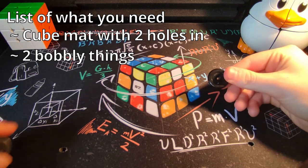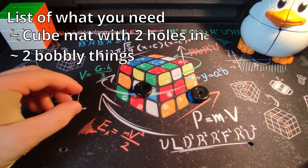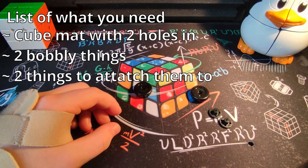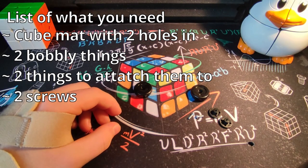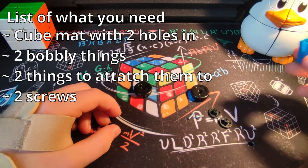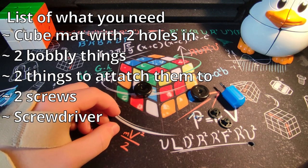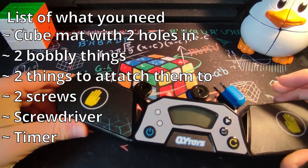Two of these little bobbly things which will eventually go on top, these two things which they'll connect to underneath, and two screws to connect them together. For this, because they're screws, you're going to need a screwdriver and of course your timer.